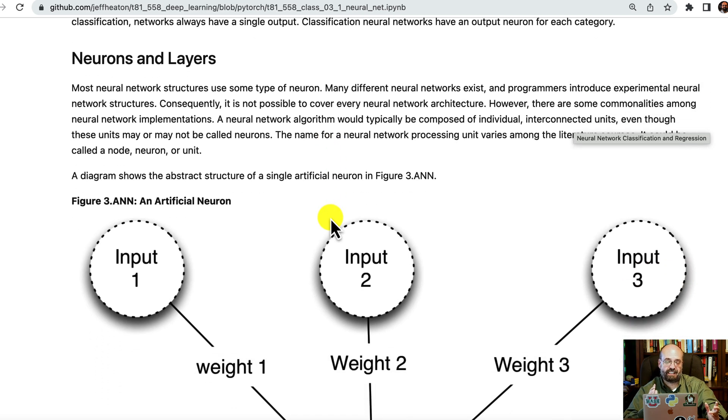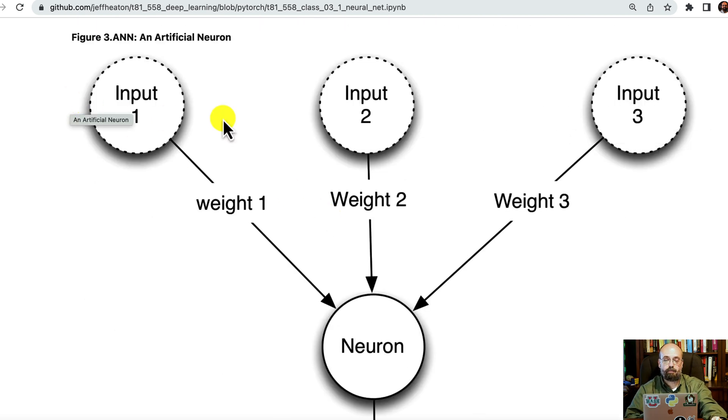So you hear a lot about neurons and layers. Layers are groups of neurons that are fairly similarly connected. Most neural network libraries, like PyTorch, TensorFlow is the same way, you typically have one individual object for a layer, and you think of things in terms of layers. Rarely are you defining the individual neurons. Your input neurons almost aren't really neurons. They're sort of placeholders. If you're sending in a vector of size three, then you're going to have three input neurons.